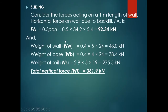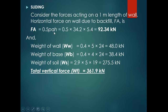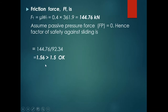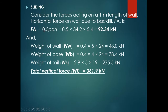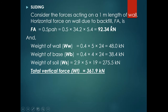Now let's get to the first check: check against sliding. If the retaining wall is failing in sliding, we have to either provide a shear key or increase the size. Considering the forces acting for sliding, the horizontal force on the wall due to backfill Fa = 0.5 × Pa × h. The 0.5 is because we have a triangular pressure distribution — half base times height — with height being 5.4 m. The total horizontal force is 92.34 kN, and this is your sliding force.